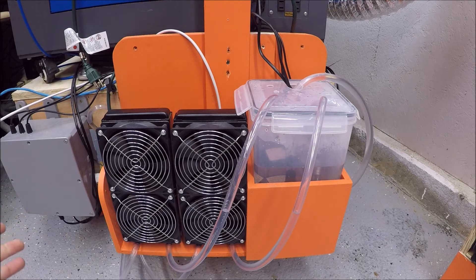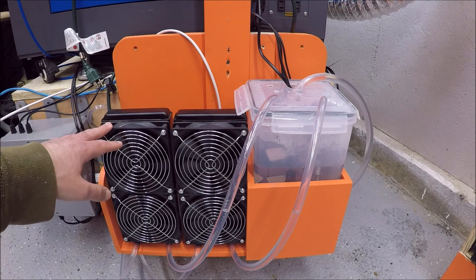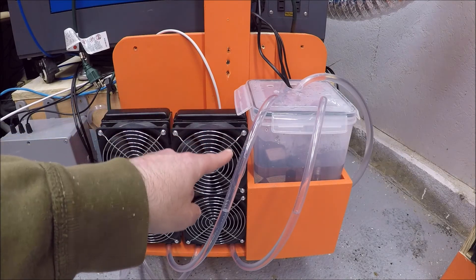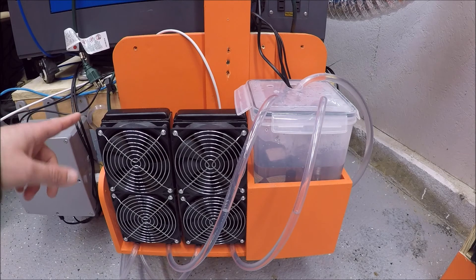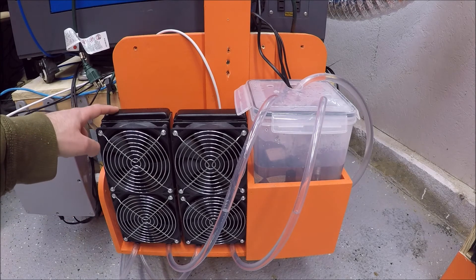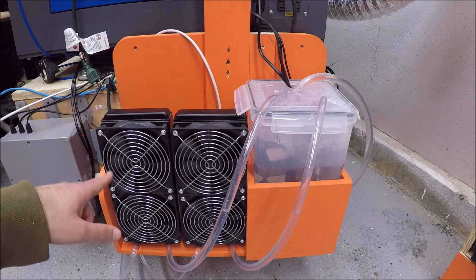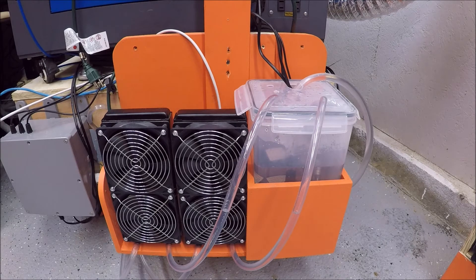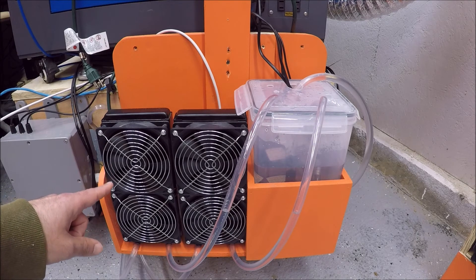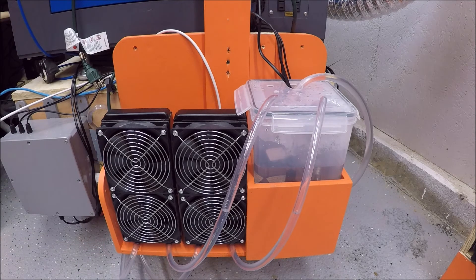So below the controller, we have this basket, for lack of a better term. And this houses our fans and our reservoir. And that reservoir is what holds all the distilled water. Now, these aren't just fans. There's actually radiators behind here. These radiator fan combo units are typically used with computers. People, you know, pump water through their computer to cool it.